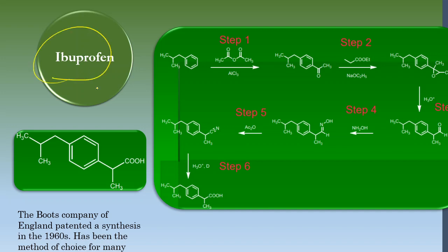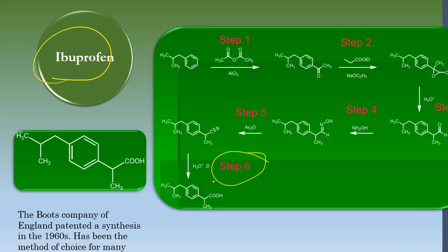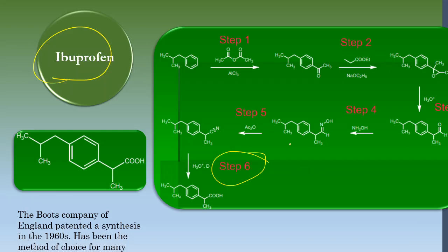Let's take a case study of ibuprofen, which I have discussed in my previous videos on atom economy. Earlier, the Boots Company in the 1960s was making ibuprofen using a six-step synthesis. Later it was substituted by the Celanese corporation HC, resulting in the BHC venture, and they reduced the steps to three. The same compound that previously required six steps could now be prepared in three steps. The derivatives are reduced, reagents are reduced, time is saved, and money is saved.